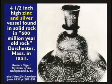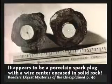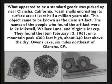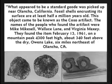This zinc and silver vessel was found in solid rock supposedly 600 million years old — no, this is pre-flood, not pre-Cambrian. What appears to be a spark plug was found encased in solid rock in California. From Reader's Digest Mysteries Unexplained: near Owens Lake, California, they found what looked like a geode. When broken open, it looked like a spark plug inside, so they x-rayed it. It became known as the Coso artifact, found in 1961 on a mountain peak 4,300 feet high.